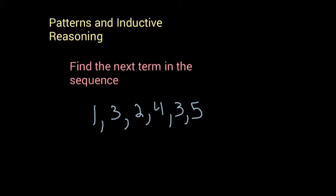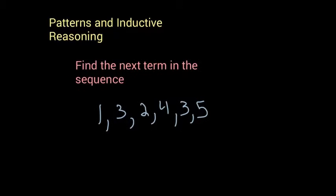So we have one, three, two, four, three, five. So let's see if we can determine a pattern with this. To get from one to three, we're adding two, three to two is minus one, two to four is plus two, four to three is minus one, three to five is plus two.